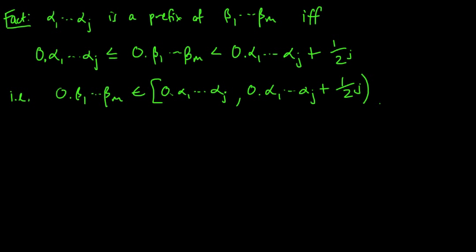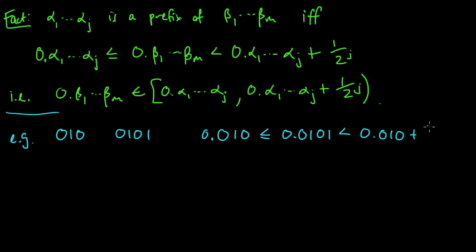So for example, let's look at an example. 0, 1, 0 is a prefix of 0, 1, 0, 1, say. That's a prefix of that, clearly. And so according to this, we should have 0.010 less or equal to 0.0101 less or equal to 0.010 plus 1 over 2 to the 3, which is, of course, 0.001. So this is just 0.011.